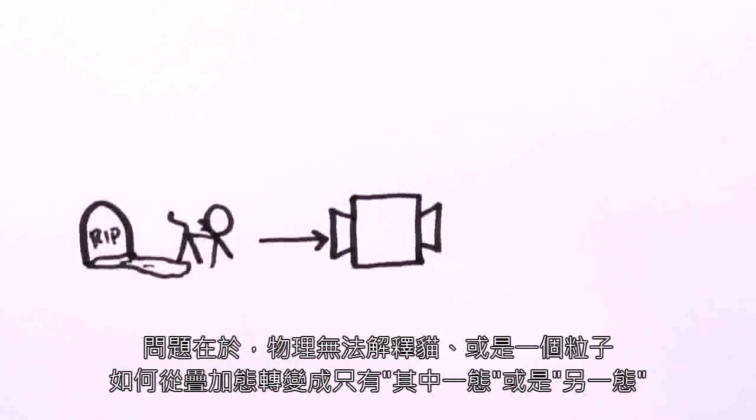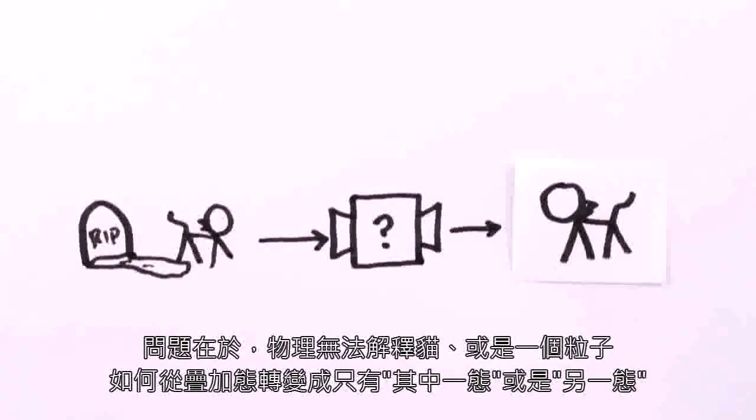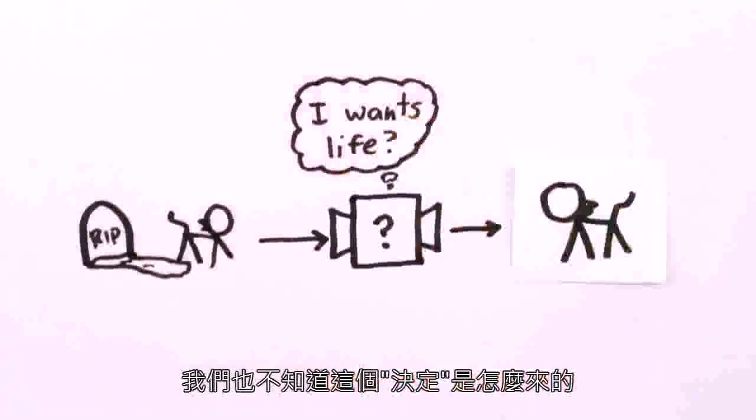The problem is, physics can't explain how the cat, or particle, goes from being in a combination of two states at once to being in just one, or just the other. Nor do we know how the decision is made.